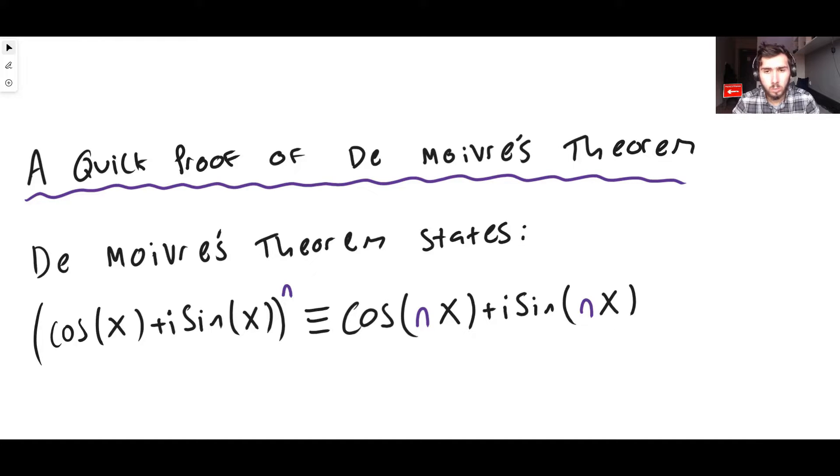Basically what this theorem is, it states that if you have some complex number cos x plus i sine x, and you raise that complex number to the power of n, where n can be any real number that you want, then that's actually the same thing, it's equal to, identical to, cos n x plus i sine n x as I've written there. That right there is De Moivre's theorem.